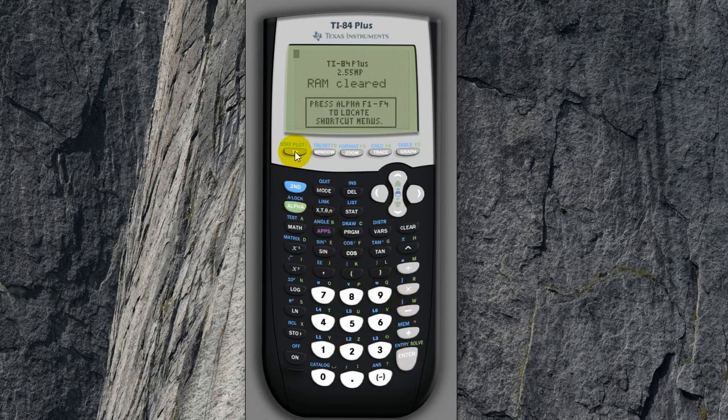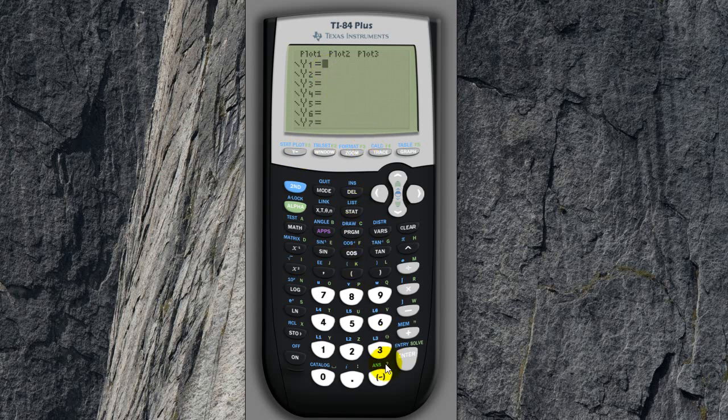Okay, let's draw two straight lines. So let's press Y equals. So just whatever line you want, let's go negative 3x plus 4. Let's make that our first line. And let's make the second line just a simple one, 2x plus 3, something like that.